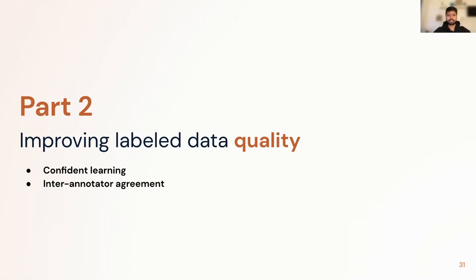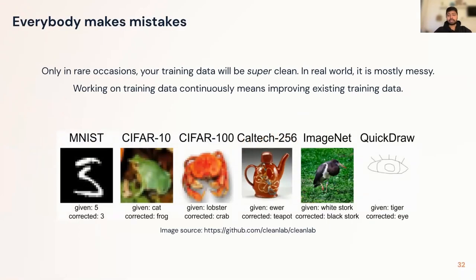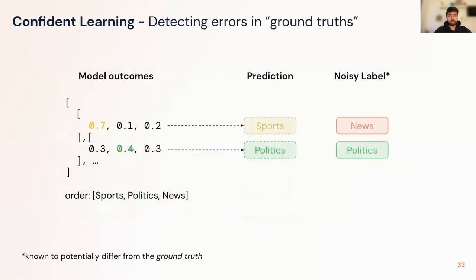Hi everyone. In this talk I'll mainly cover the challenges faced when dealing with training data and how to overcome them — mostly about confident learning and inter-annotator agreement. Over time it has become very evident that in almost all cases your training data will be messy. The starting point to improving your data label quality is to clean the training data. On this slide you can see some of the most popular datasets which have been given incorrect labels that machine learning models have corrected.